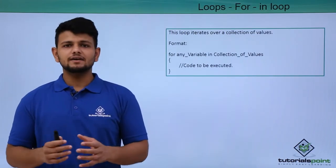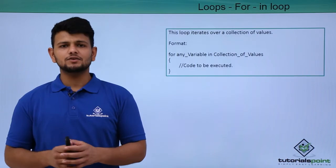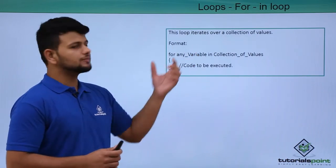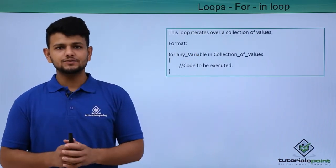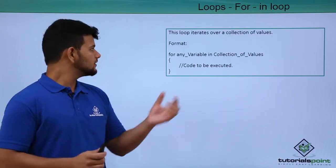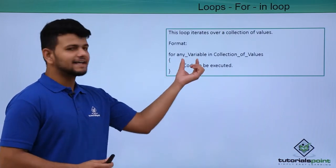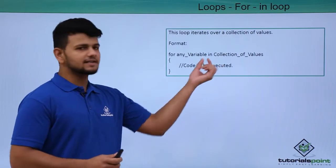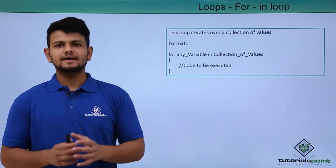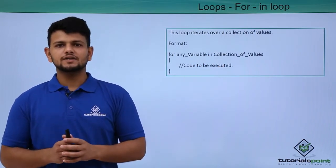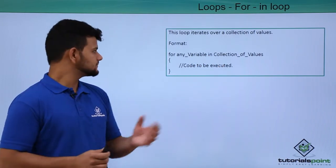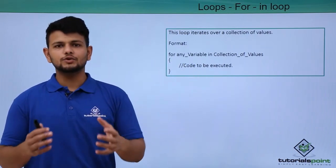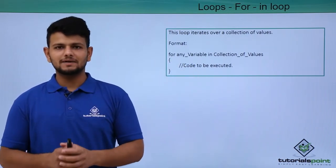Now let us see an implementation of the for-in loop. This loop iterates over a collection of values, where 'for' is a keyword, any variable is a variable you declare, 'in' is a keyword, and 'collection of values' is any collection of values. Inside the braces, we write the code that we want to execute multiple times.